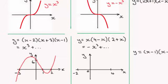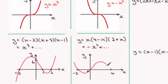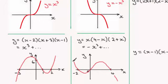This curve starts to descend from the far left. It comes down through minus 2, bottoms out somewhere between minus 2 and 0 — not necessarily at the midpoint — rises up through the origin, peaks somewhere between 0 and 4 roughly around the middle, comes back down through 4, and then continues down. Notice the curve does not swing out or curve in at the tail ends — it just carries on smoothly.